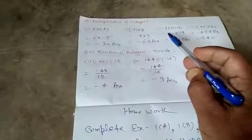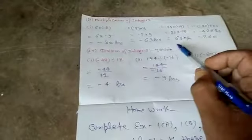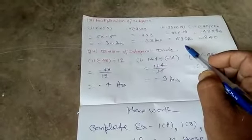Fourth. 35 multiplied minus 18. Equal to 630.